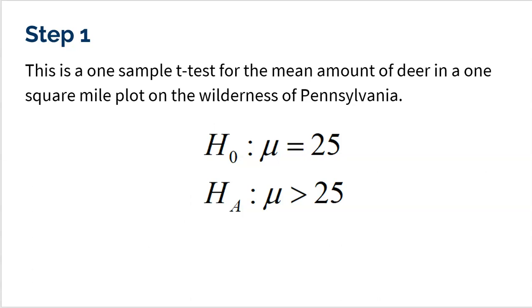Honestly, anything less than 25 is obviously going to be okay, right? But we always use an equal sign for our null. So we're going to assume that 25 is the okay number, and that is a mu. That is the mean of every single one-square-mile plot in all of the wilderness of Pennsylvania. And the alternative, though, is what we're trying to check. We're trying to check, do we have an overpopulation problem? So we're trying to check, is that mean of each one-square plot more than 25?